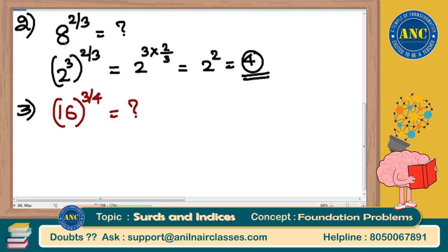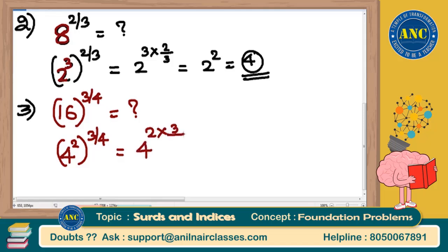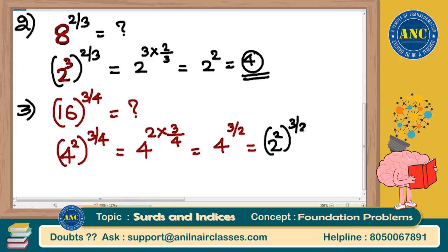Whenever you get 16, it can be written as 2 power 4, or 4 power 2. Try to express it as a perfect square or some power of some base. So 16 = 4 squared, and 16 power 3 by 4 = 4 squared power 3 by 4 = 4 power (2 × 3/4) = 4 power 3 by 2. But this still doesn't give a whole number, so write 4 as 2 power 2: 2 power 2 whole power 3 by 2 = 2 power 3 = 8.